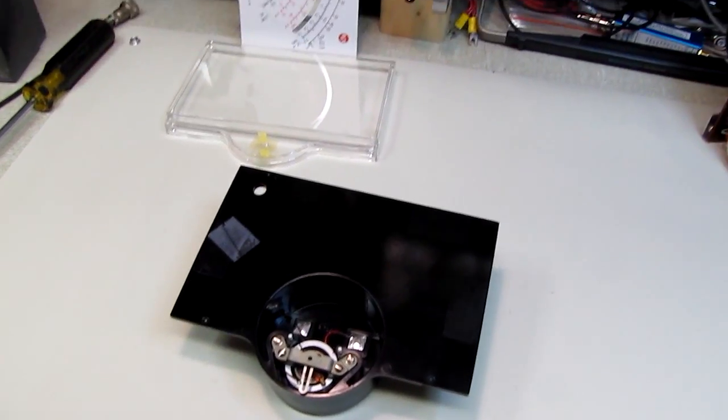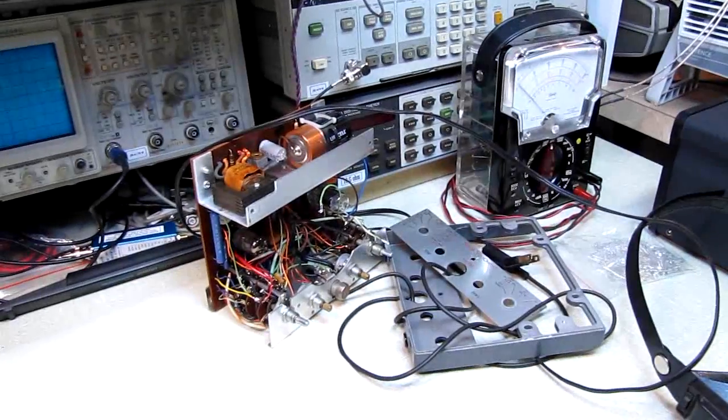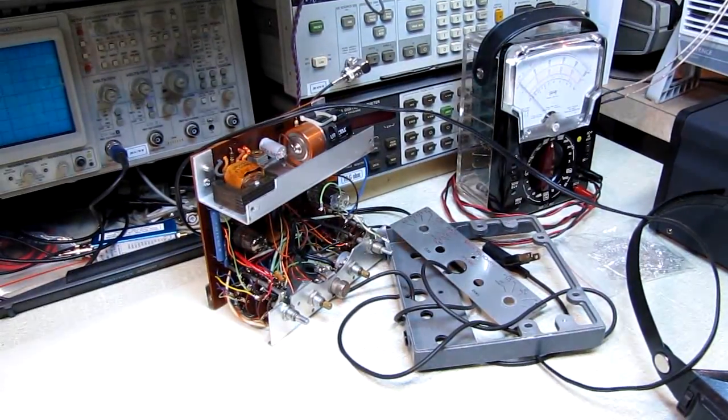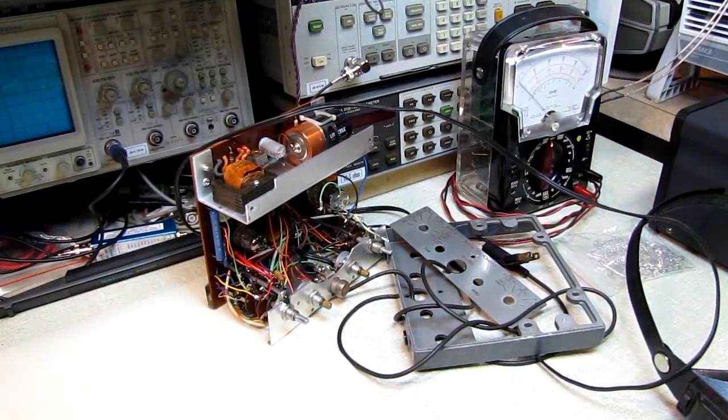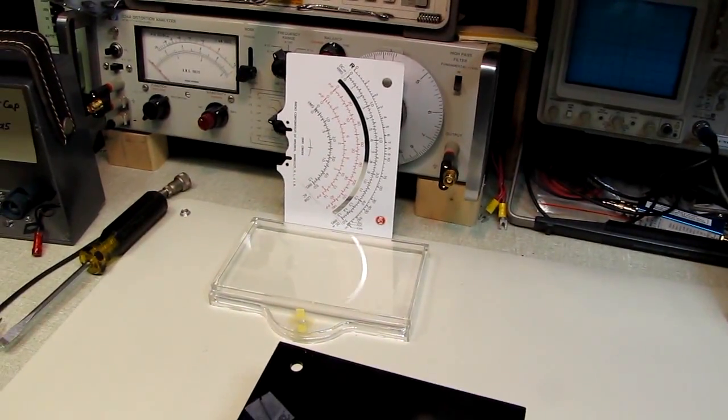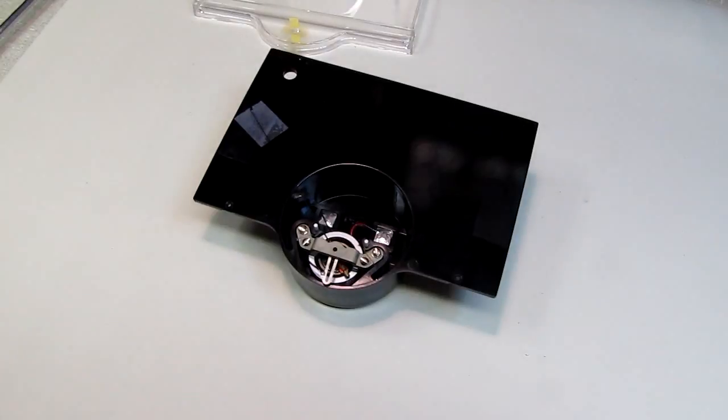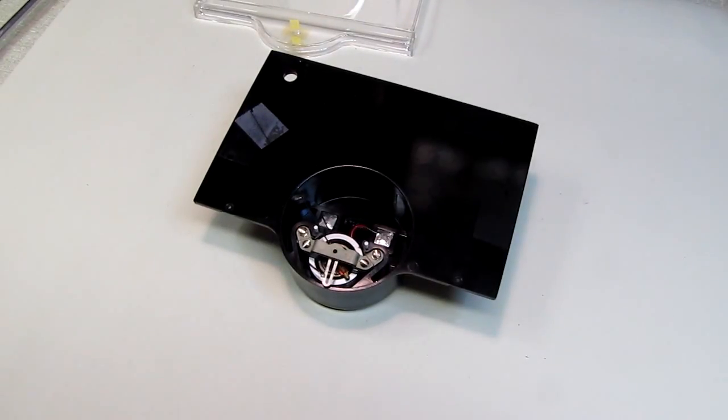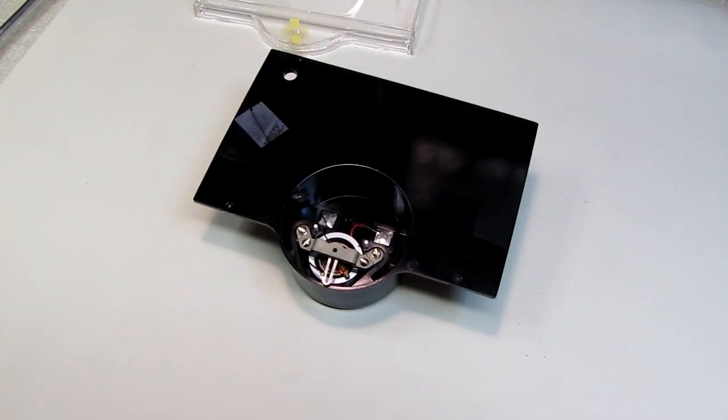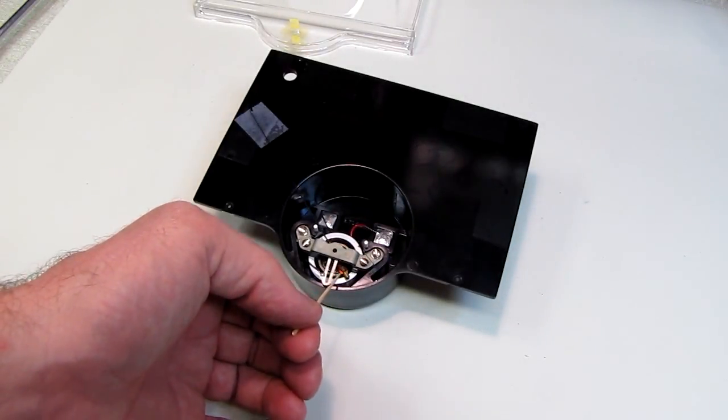So we've disemboweled it. Over here we have most of the guts exposed. Very clean inside. This meter obviously was taken care of. Over here in the background we have the dial face and the cover for the meter. And here we have the works.